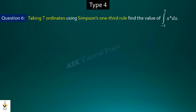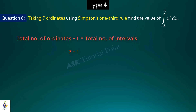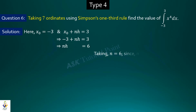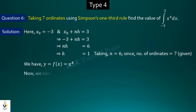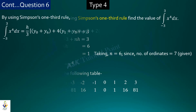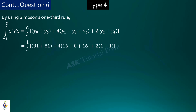Now I will discuss a type 4 question — question number 6. Using 7 ordinates and applying Simpson's one-third rule, find the value of the integral from minus 3 to 3 of x to the power 4 dx. Since there are 7 ordinates, the number of intervals is 7 minus 1 equals 6. So x0 equals minus 3, x0 plus nh equals 3, and with n equals 6 we find h equals 1. Since f(x) equals x to the power 4, we construct the table and applying Simpson's one-third rule formula, the required answer is 98.